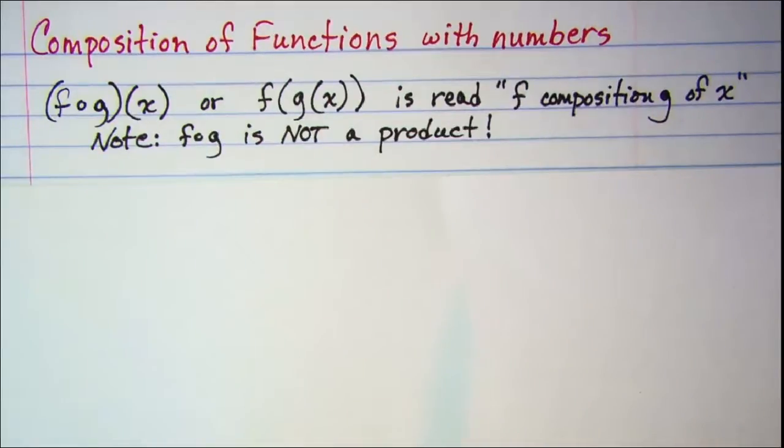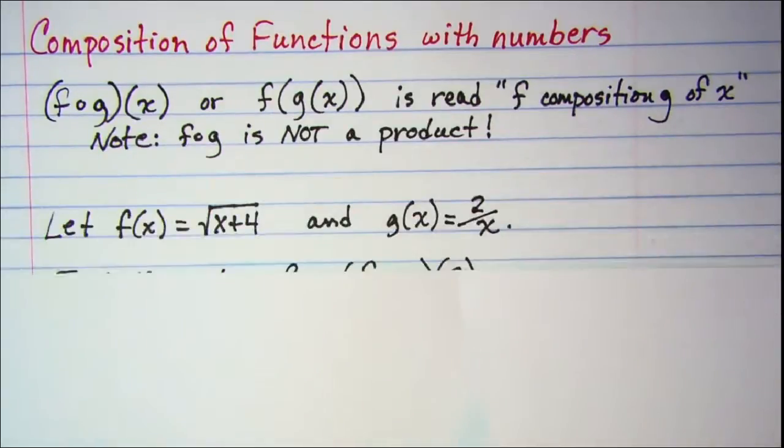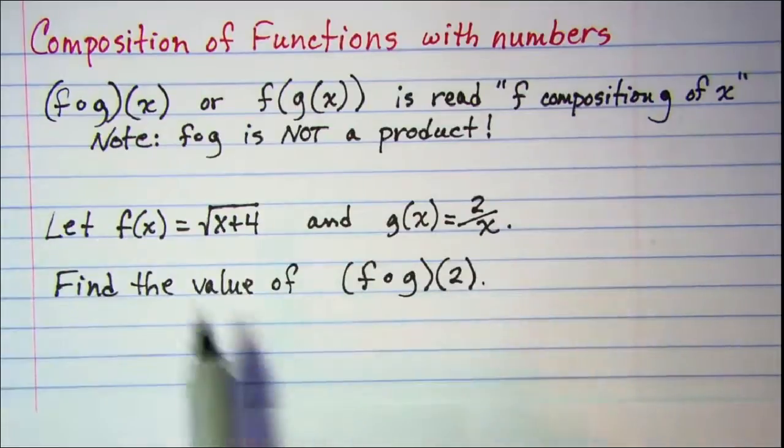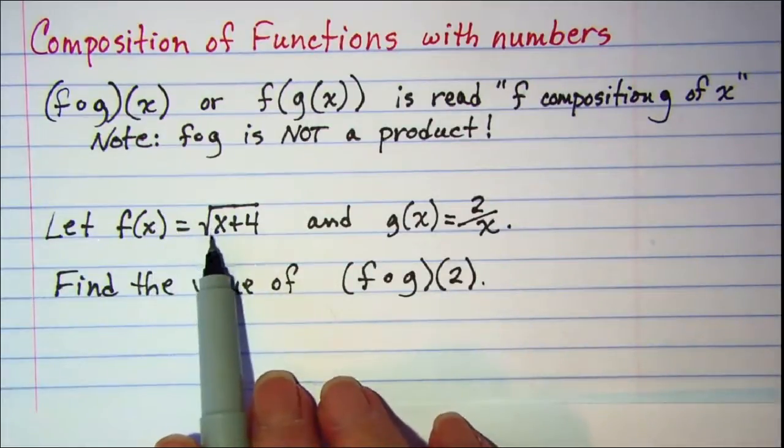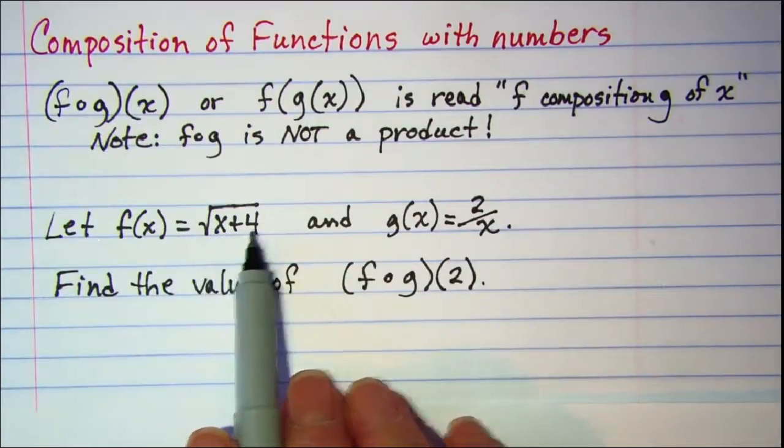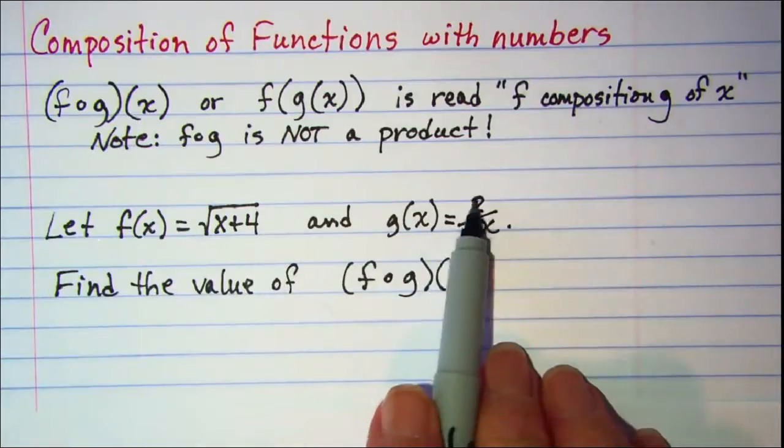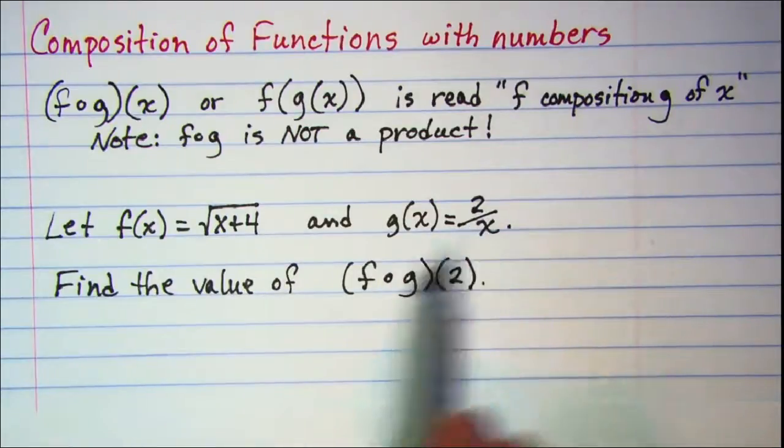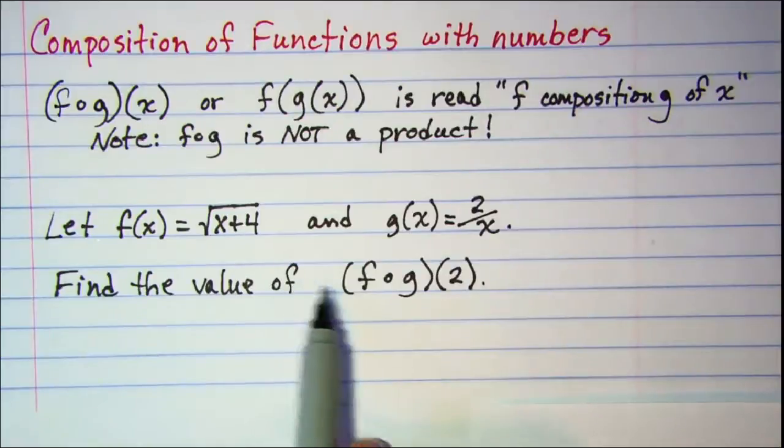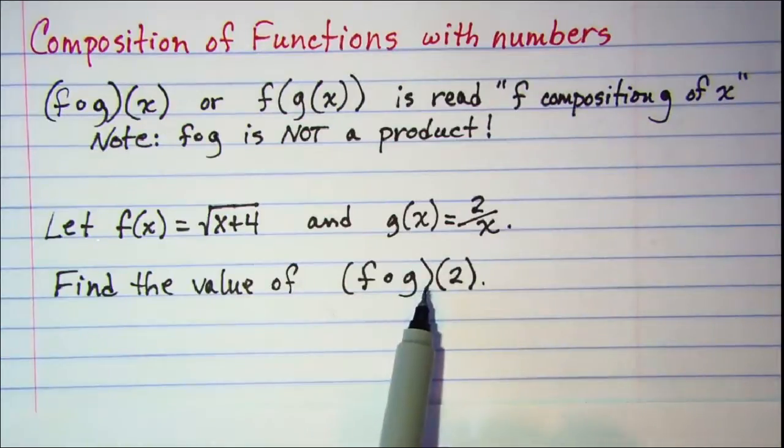Now the best way to show how to do this with numbers is to do an example. So let's let f(x) = √(x+4) and g(x) = 2/x, and we're asked to find the value of f∘g(2).